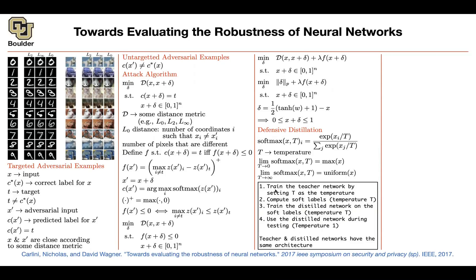Distillation and defensive distillation use the same algorithm we saw before. You have a teacher network that you train using temperature T. You generate data from the teacher network with the same temperature. You train the distilled network on the data generated by the teacher. At prediction time, you set the temperature to 1 and use the distilled network for inference. The difference from the previous distillation paper is that here the teacher and distilled networks have the same architecture—that's the only difference.